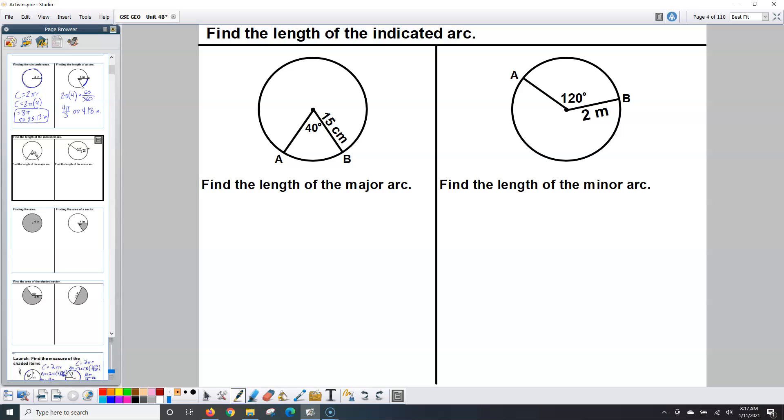We're going to find the length of these arcs on the left hand side. It's very specific that it wants you to find the major arc. Major arcs are greater than half the circle, bigger than 180 degrees. So 40 degrees is not bigger than half the circle, so I need to figure out what that is. I'll say 360 minus the 40 degrees will tell me what the rest of it is, and that's 320 degrees.